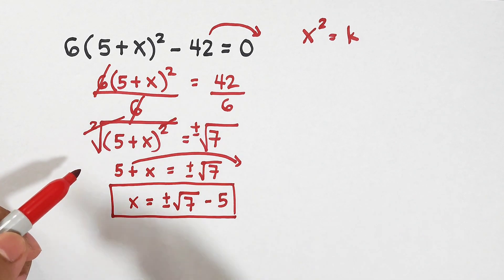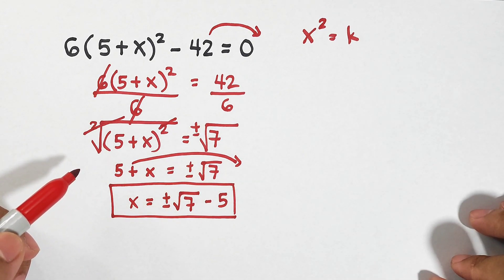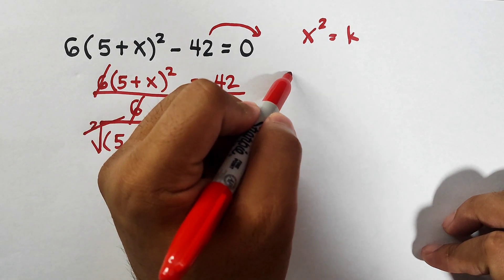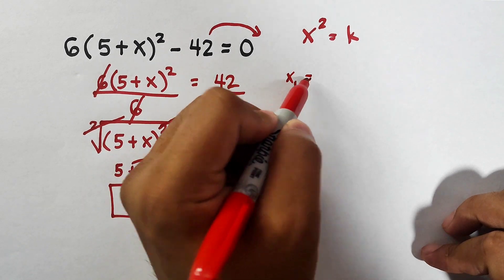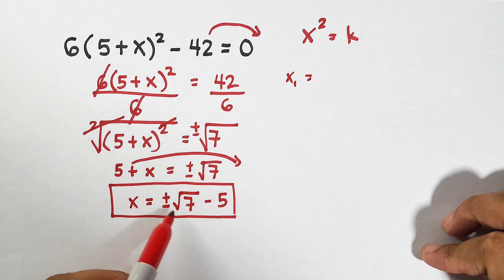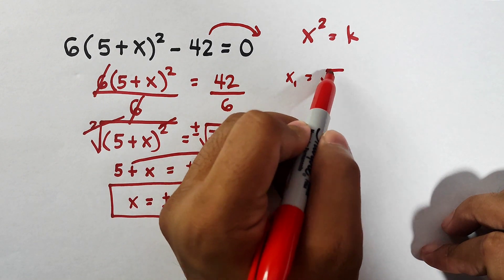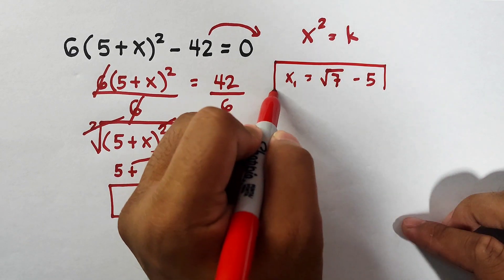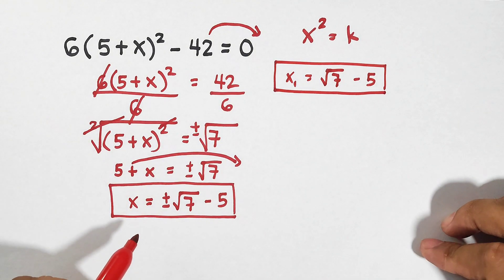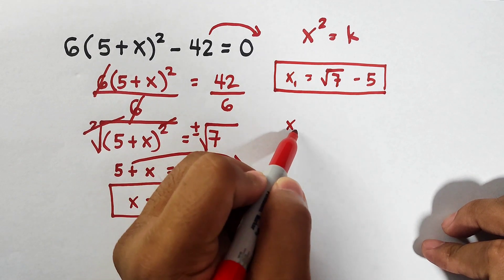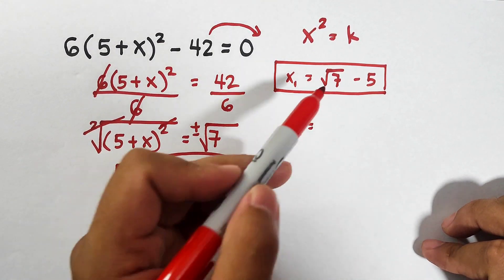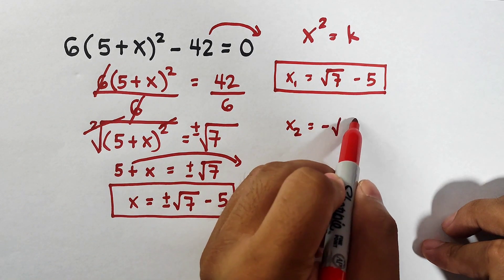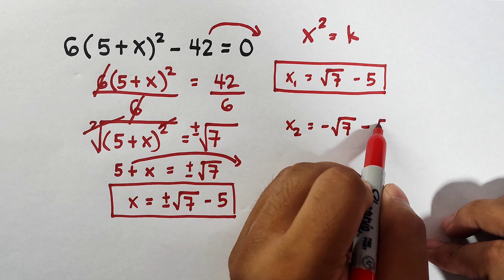But if your teacher or professor asks you for the two different solutions, you can separate the two solutions. First the x sub 1, the first solution. Use the positive square root of 7, that is square root of 7 minus 5. So this is the first value of x. Now for the second solution, which is x sub 2, we are done with the positive, so get the negative. You have negative square root of 7 minus 5.